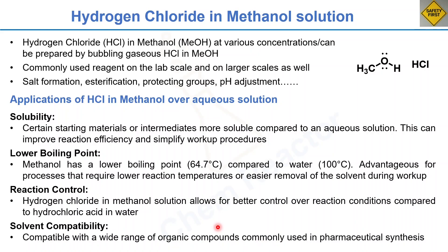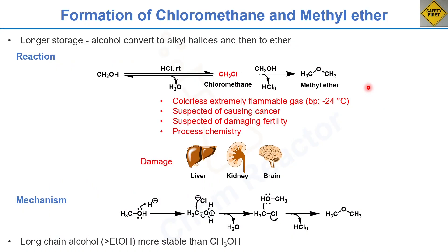These are some of the advantages of HCl in methanol solution, but it comes with one major disadvantage: the formation of chloromethane and dimethyl ether. Generally HCl in methanol solution is stable, but storing it for a longer time can convert the alcohol to an alkyl halide and then to an ether.